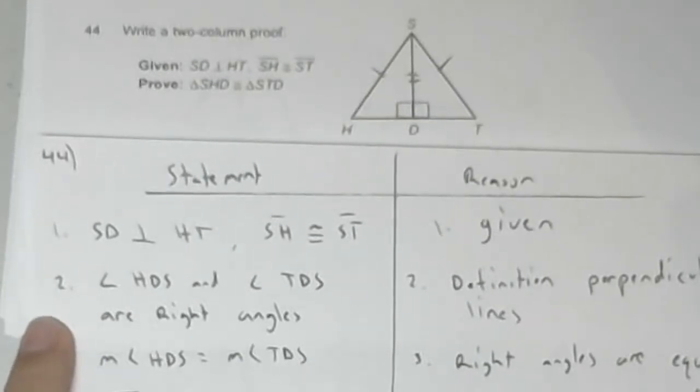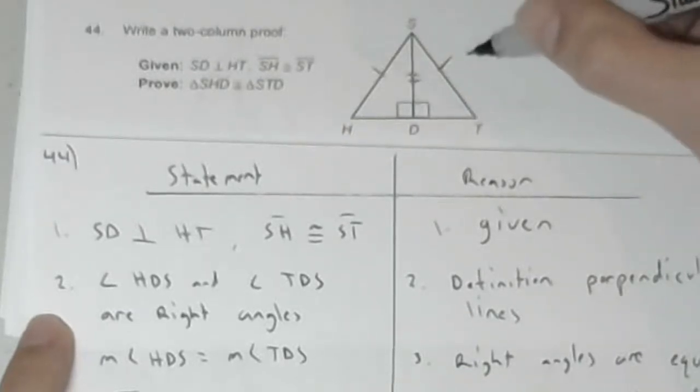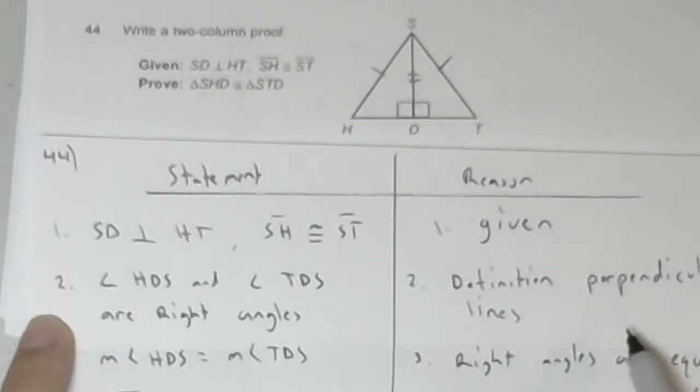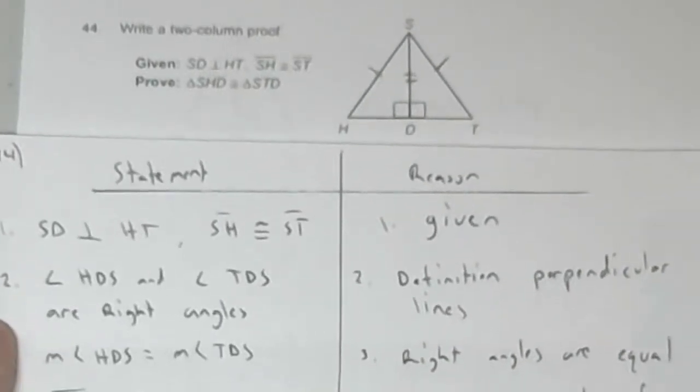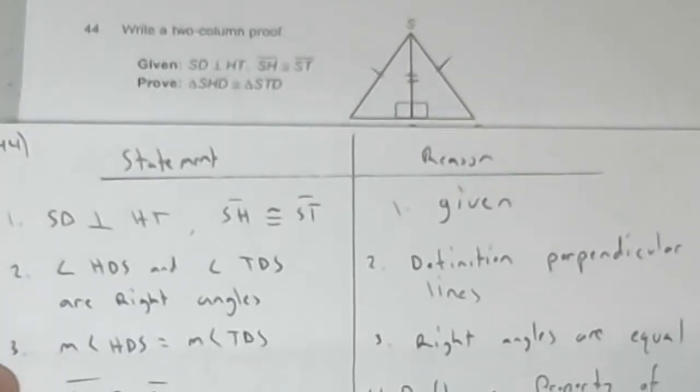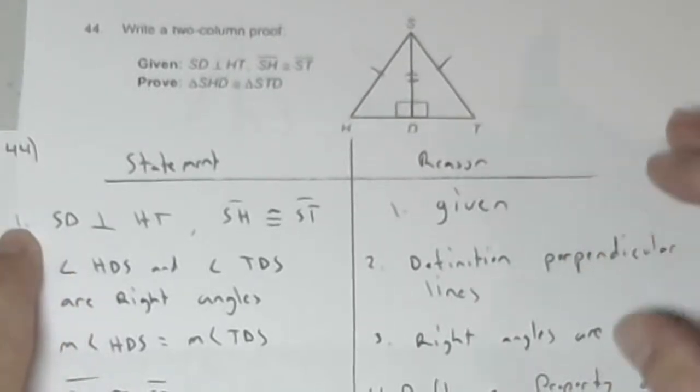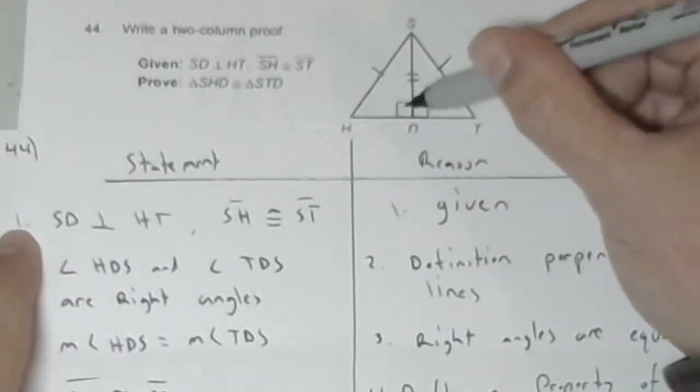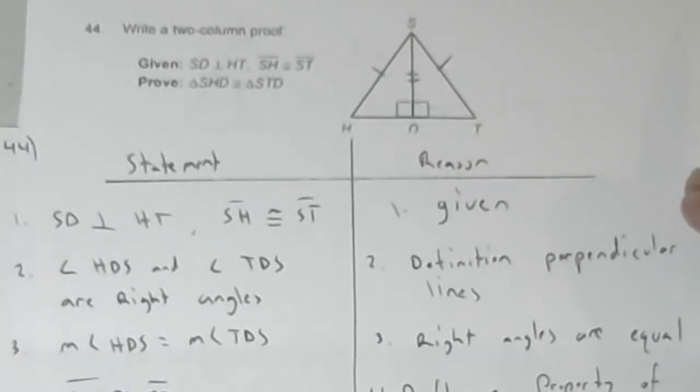Our next statement is angle HDS and angle TDS are right triangles. That is because that is the definition of perpendicular lines. Number three, angle HDS is equal to angle TDS, all I'm saying is that this angle is equal to this angle. And that's true because right angles are equal, they're all 90 degrees.